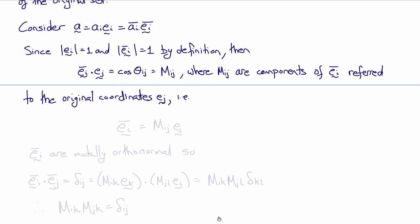In other words, we can write that ei bar, the new unit vectors, have components mij with respect to ej.